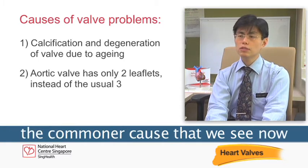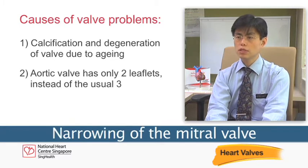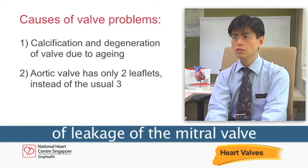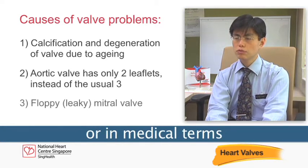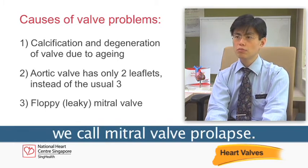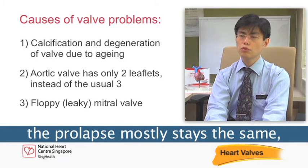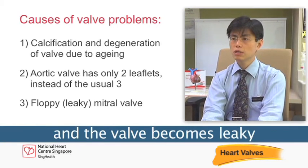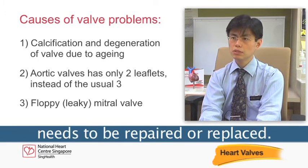For the mitral valve, the common cause we see now is leakage — narrowing of the mitral valve is actually uncommon nowadays. The most common cause of leakage of the mitral valve is what we call a floppy mitral valve, or in medical terms, mitral valve prolapse. Most of these patients stay the same, but in a small minority the prolapse gets worse, the valve becomes leaky, and if it becomes severe, the valve needs to be repaired or replaced.